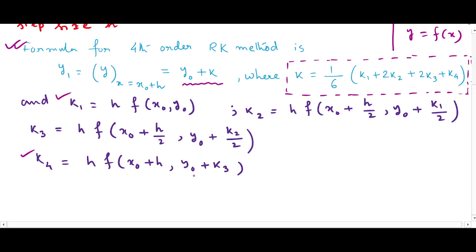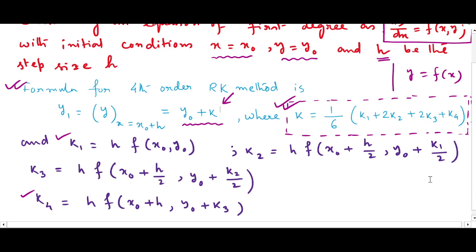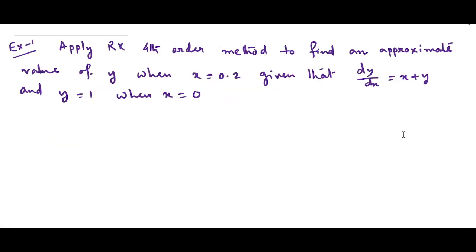k3 and k2 are almost similar. k4 is h times f(x-naught + h, y-naught + k3). After finding k1, k2, k3, and k4, we put all four values into the k formula to get k, and then we get y = y-naught + k. Now let us go to the first problem.